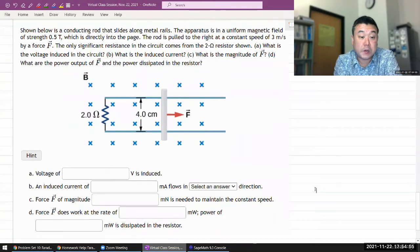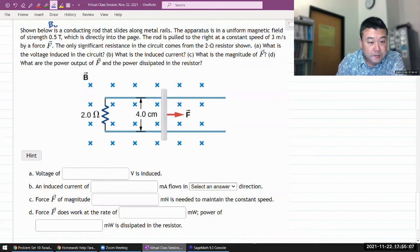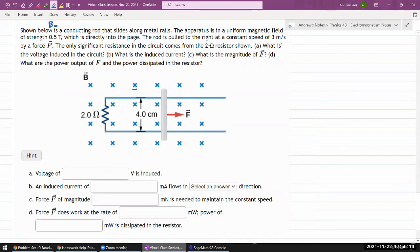Shown below is a conducting rod that slides along metal rails. The apparatus is in a uniform magnetic field of strength B naught, which is directly into the page. The rod is pulled to the right at constant speed by some force. The only significant resistance in the circuit comes from the two ohm resistor. What is the voltage induced in the circuit?